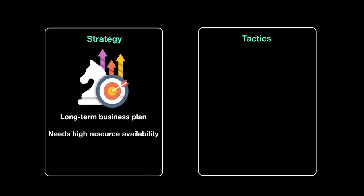Strategy requires high resource availability. When you're planning to expand and grow, you're going to need to buy things such as land, machines, train workers, hire them, and bring in capital. Whenever you're planning on expanding, you definitely need a high availability of resources so that there are no stoppages halfway through your implementation of the strategy.